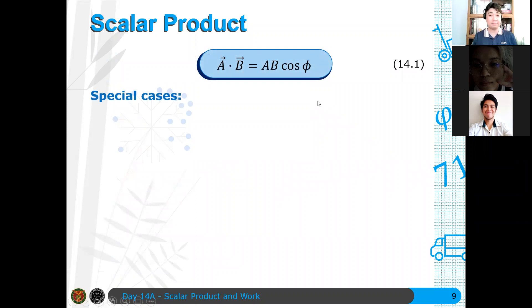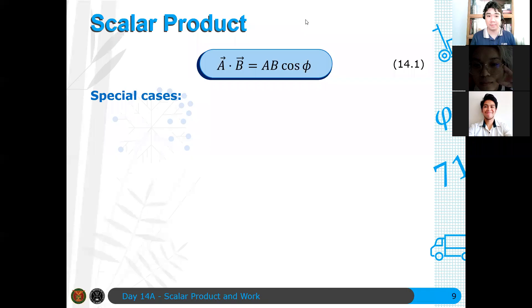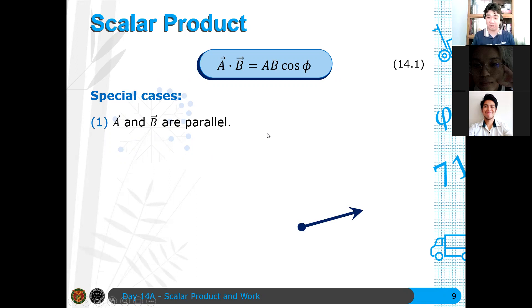Now, there are special cases depending on the angle phi. For example, if a and b are parallel, here, a and b are parallel, then the angle between them is zero. So, the phi is just zero, and therefore, a dotted with b is just the magnitude of a multiplied by the magnitude of b. So, a dot b is ab cosine of zero. If a and b are parallel, then the dot product is just the product of their magnitude.